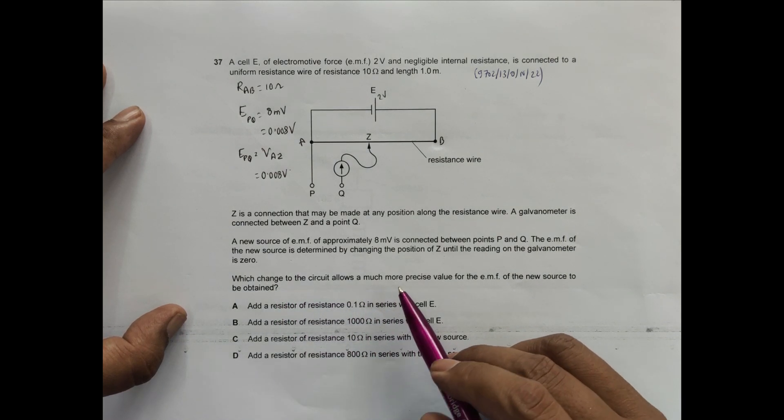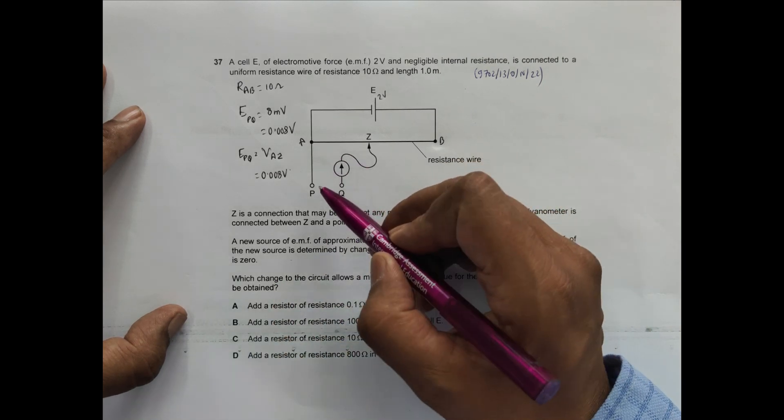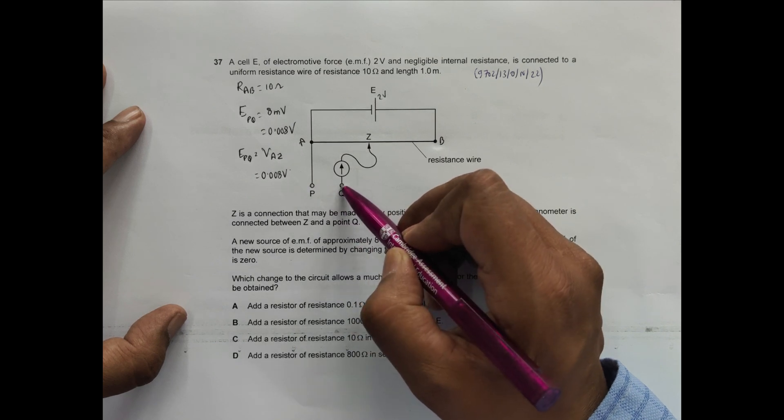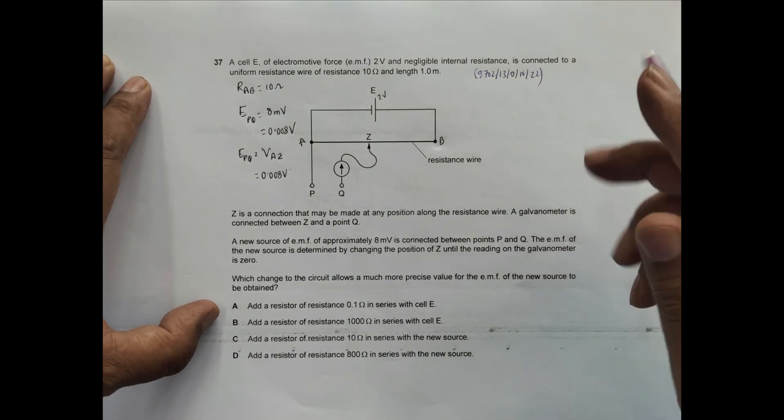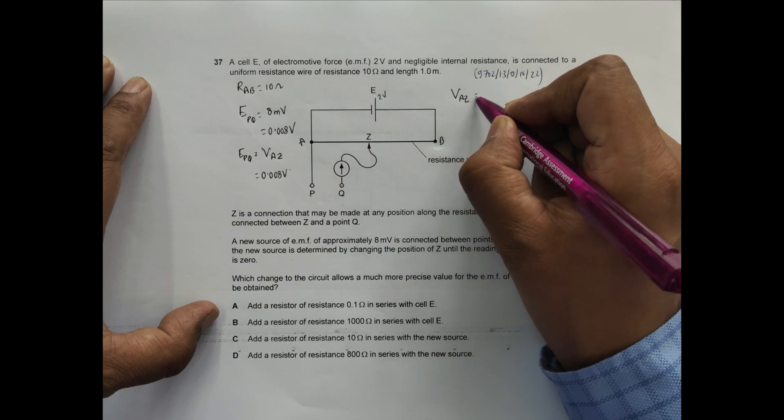What change to the circuit allows a much more precise value for the EMF of the new source to be obtained? We need to obtain a more precise value for VAZ. The value of VAZ will be equal to...